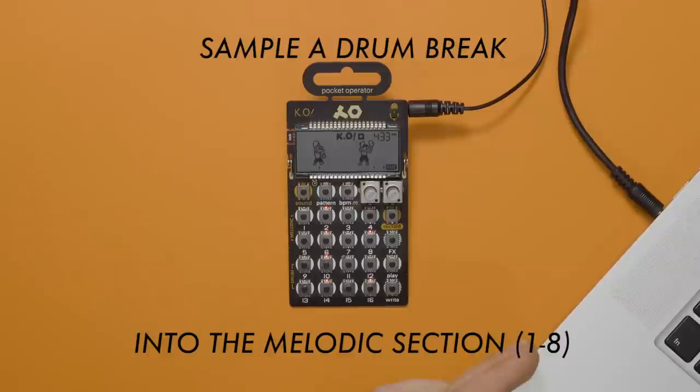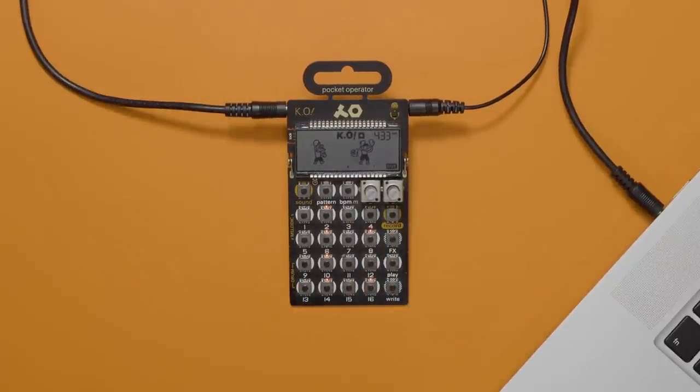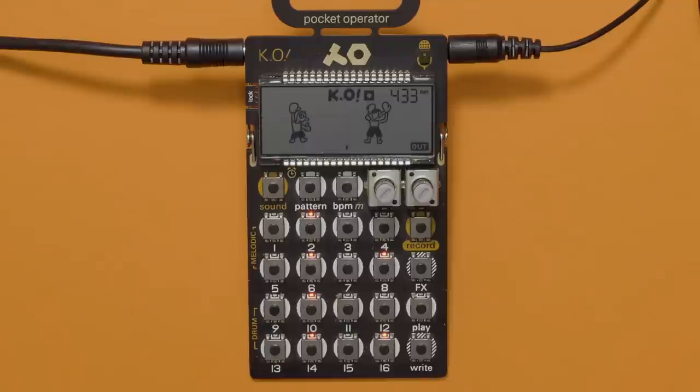To speed up this process a bit, we can sample into the melodic section first. But that doesn't slice the drum samples. True, but it does allow us to use one of the hidden features of the KO.